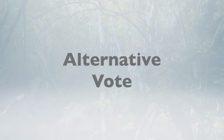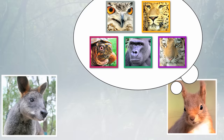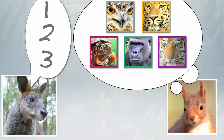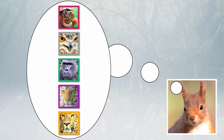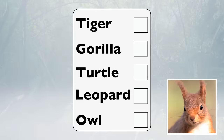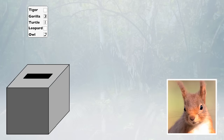Now let's look at the alternative vote, which Wallaby explains to Red Squirrel. Instead of picking one and only one candidate, he can rank them in order of most favorite to least. He goes into the voting booth and gets the same ballot as before, but now puts Turtle as his first choice, Owl as his second, and Gorilla as his third. He dislikes Leopard and Tiger equally, so he stops filling in his ballot and drops it in the box.